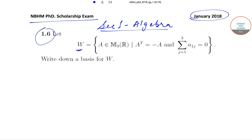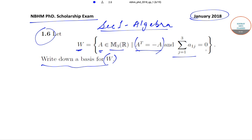The question is: let W be the set of matrices A which belong to M3(R) such that A transpose is equal to minus A, and the summation of a_{ij} where j goes from 1 to 3 is equal to 0. We need to find the basis for W.